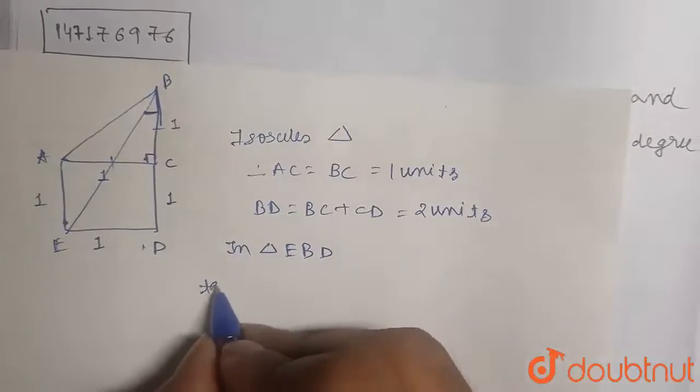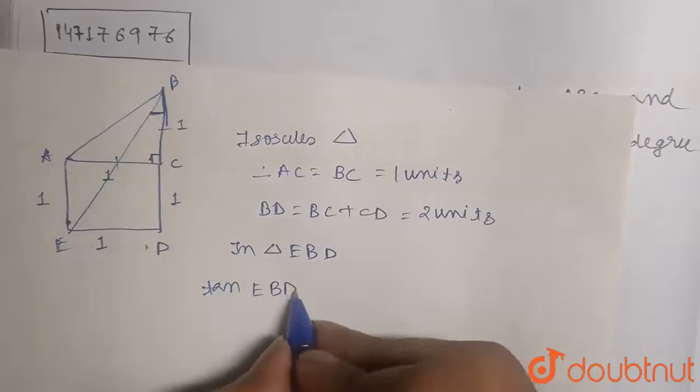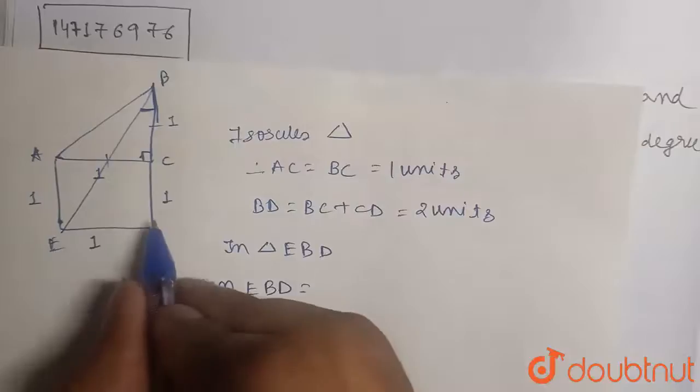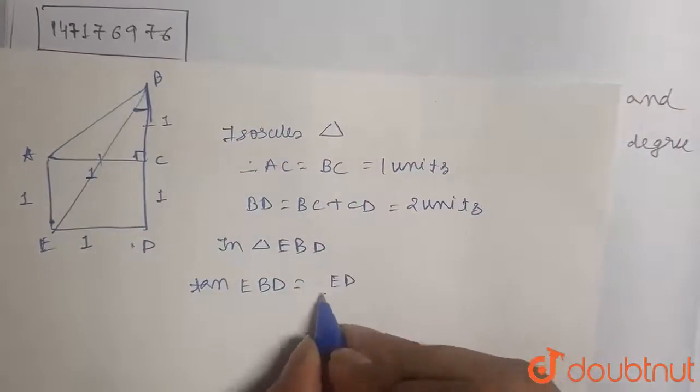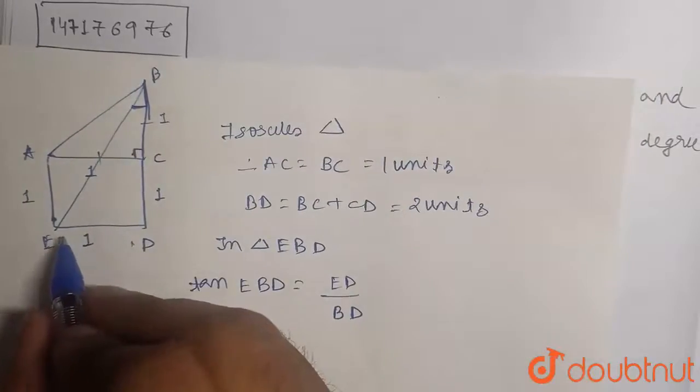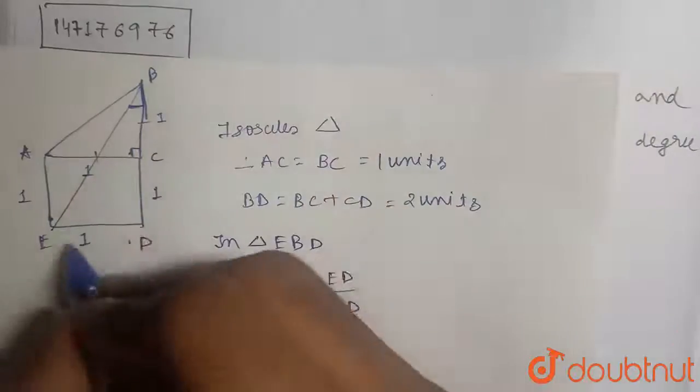Now imagine in triangle EBD, what will be tan of angle EBD? What will be the tan of that angle? ED divided by BD. Now we know the length of ED and BD.